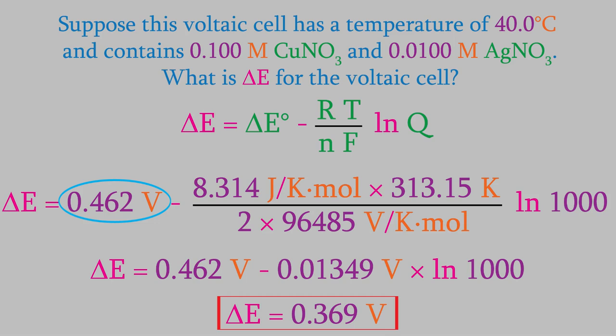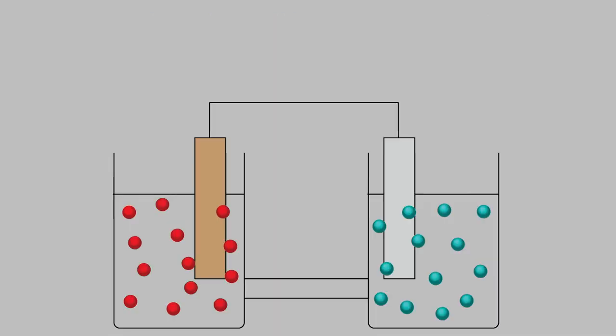Let's try one more example. Suppose we have this voltaic cell. We have an iron electrode and a zinc electrode, and the two solutions contain iron 3 ions and zinc 2 ions.